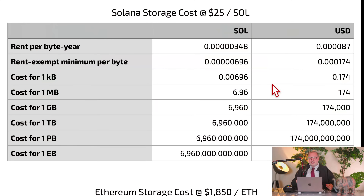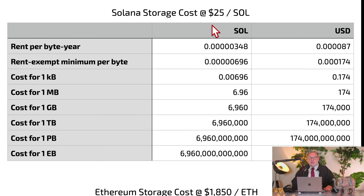Here's what it costs on Solana. I've made an assumption of a SOL price of $25, which is roughly the average of the past 30 days — a rough estimate, since prices fluctuate. On Solana, the so-called rent per byte per year is 0.0000348 SOL. That's a tiny fraction of a cent to store one byte per year.